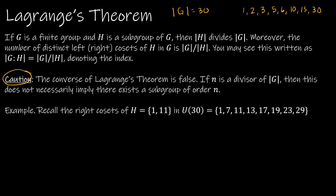The second part of Lagrange's Theorem says the number of distinct left or right cosets of H in G is the index — the order of G divided by the order of H. Let's look at the example from our last video, where H was the subgroup {1, 11} in U30. The order of H is 2 and the order of U30 is 8.